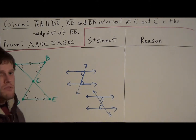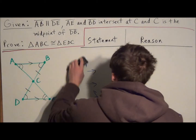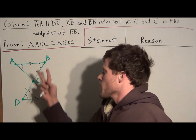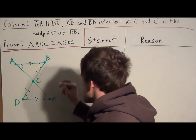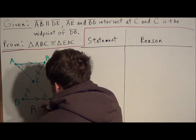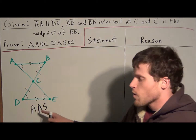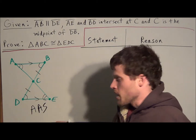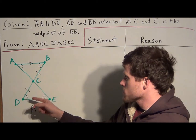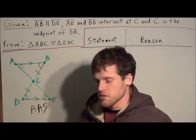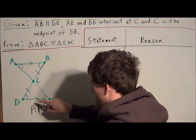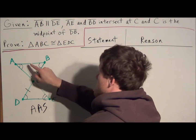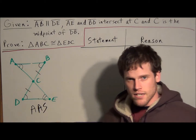Now that the diagram is completely marked up, it should be clear which postulate to use. We have two pairs of congruent angles and a pair of congruent sides, so we're going to use the angle angle side postulate. The reason we're not using angle side angle is that the tick mark is not between the two pairs of congruent angles — it's outside, not included. That's why we use angle angle side, not angle side angle.